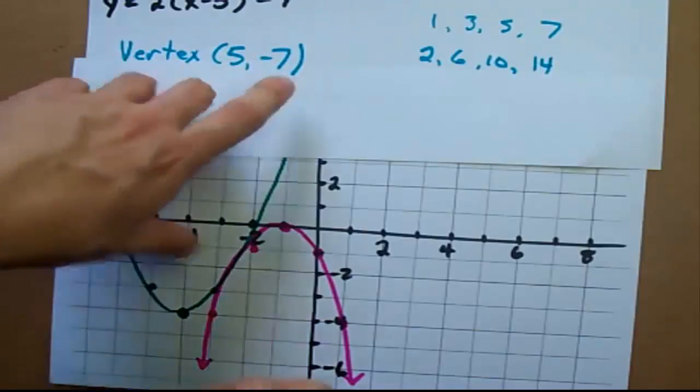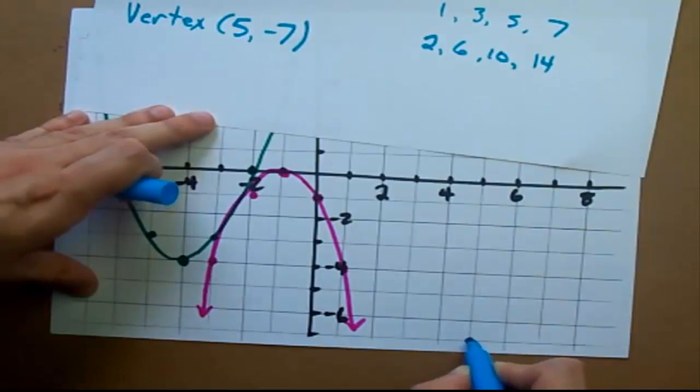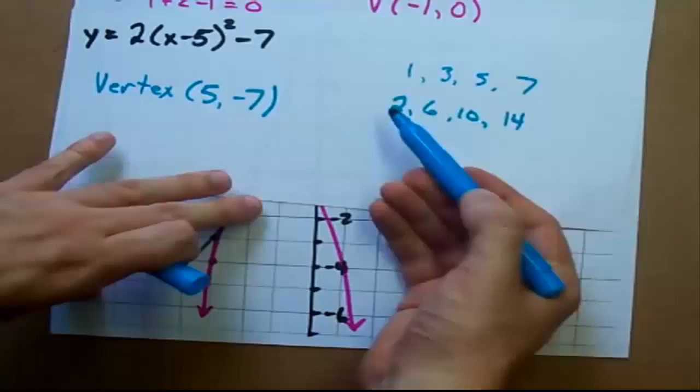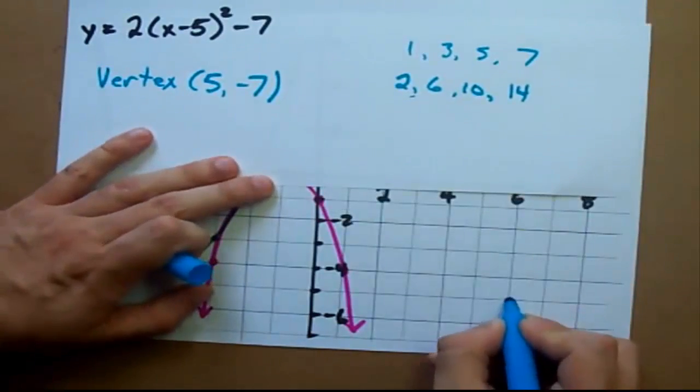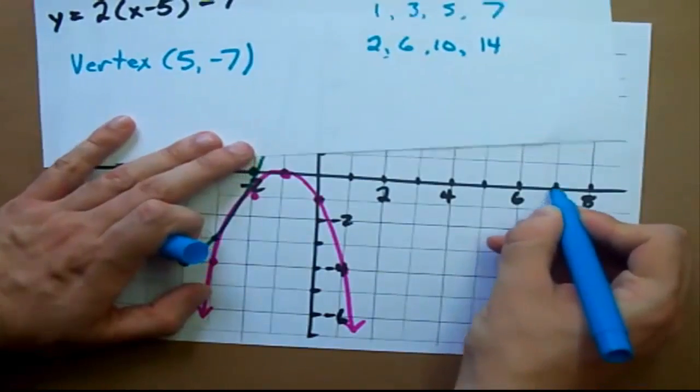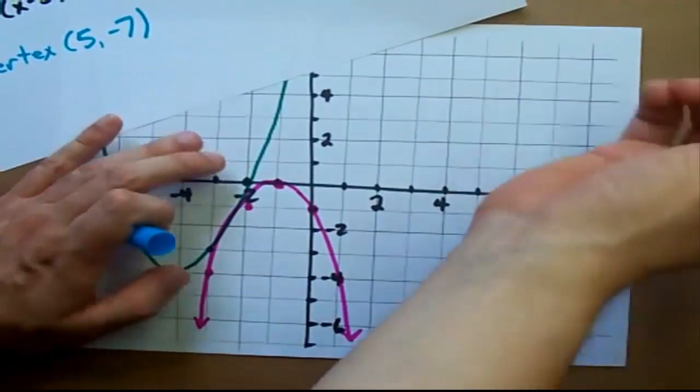Vertex at 5, negative 7. 5, negative 7 is way down here. And the step pattern: over 1, up 2, over 1, up 2, over 1, up 6—1, 2, 3, 4, 5, 6. Over 1, up 10. Now that's not going to fit.